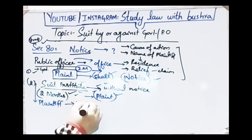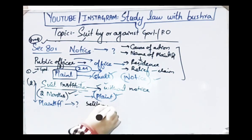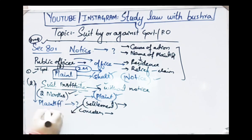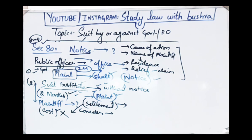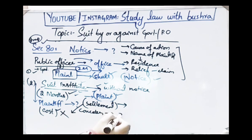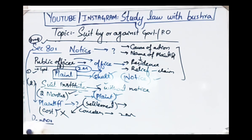That means if any settlement happens between the government and the plaintiff, or between the public officer and the plaintiff, within two months of instituting the suit — if the public officer or government accepts the plaintiff's relief claim — then the plaintiff will not receive any cost in this case, because you did not fulfill the requirements of section 80. Section 80 required: notice must be given, two months must be waited, and this must be mentioned in the plaint.